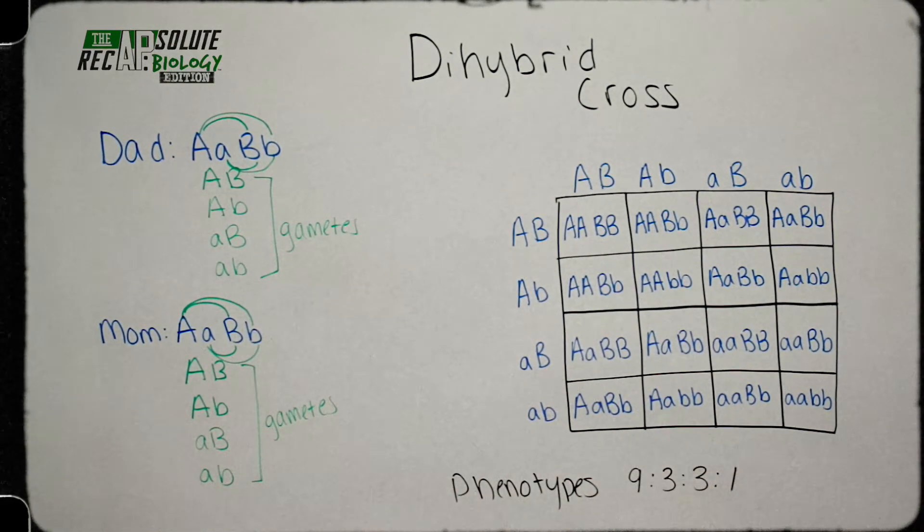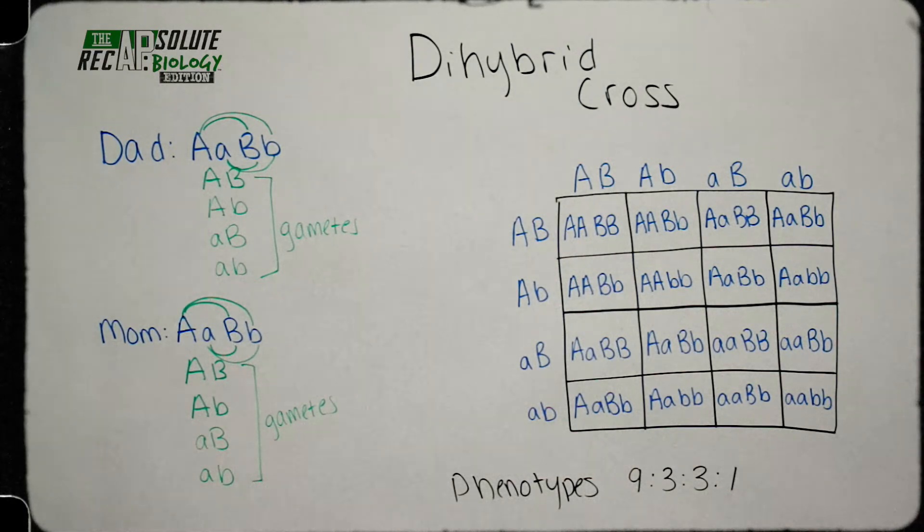This dihybrid cross of heterozygotes shows a 9 to 3 to 3 to 1 phenotypic ratio.